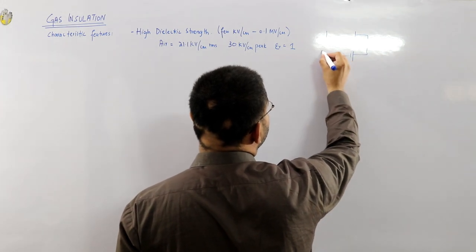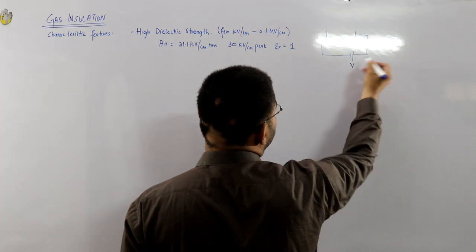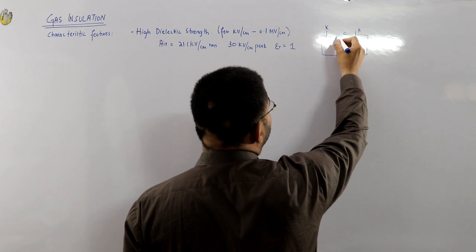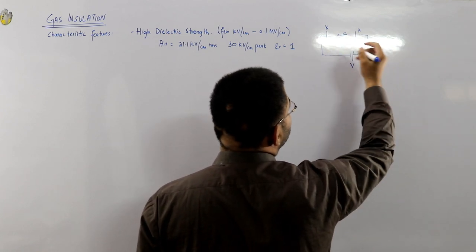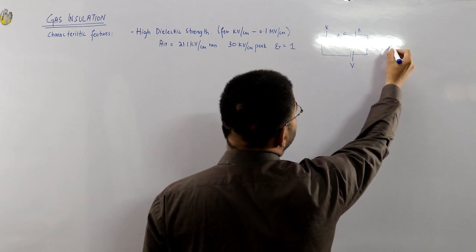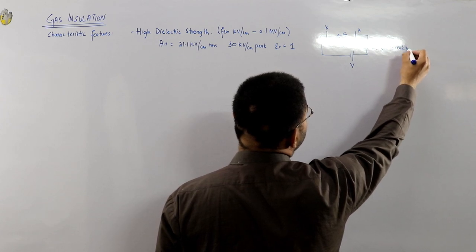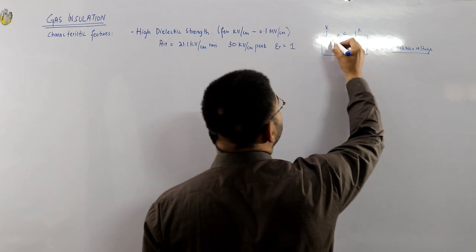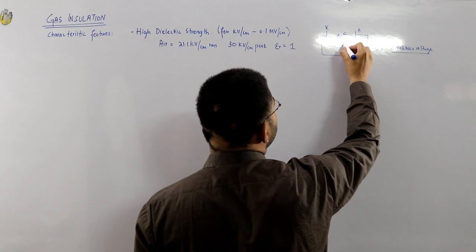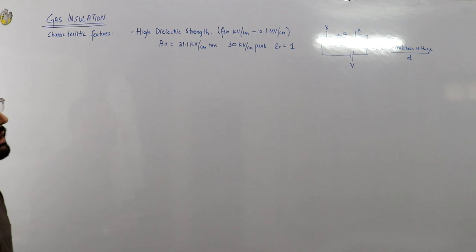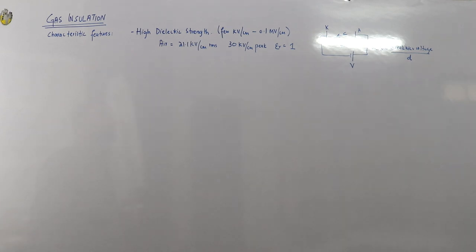The positive electrode is the anode and the negative is the cathode. Once you see an arc form, the voltage at which the arc appears is called the breakover voltage. The dielectric strength is then equal to the breakover voltage divided by the distance d — the distance between the two electrodes.